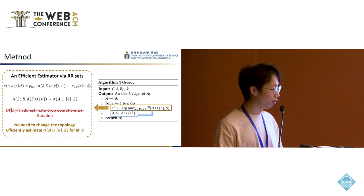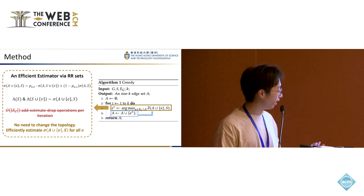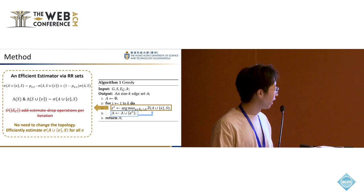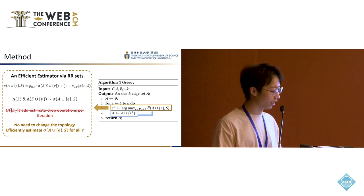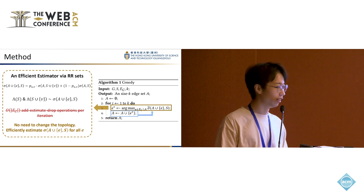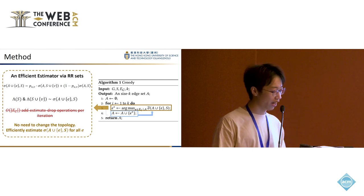By sampling a large number of RR sets, we can maintain accurate estimates on sigma_A(S union v) and sigma_A(S), meaning that we can use the coverage of S and S union v to evaluate the marginal gain of selecting an edge.